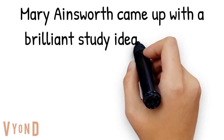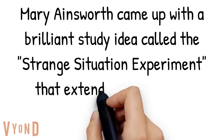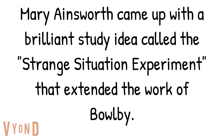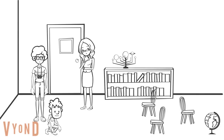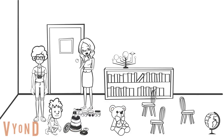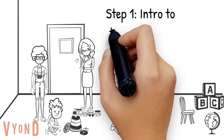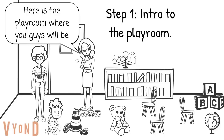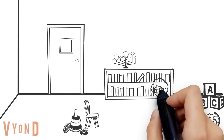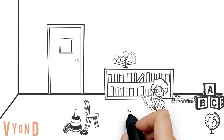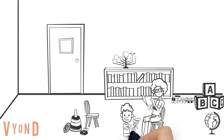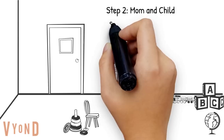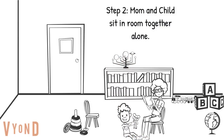Mary Ainsworth came up with a brilliant study called the strange situation experiment that extended the work of John Bowlby. In step one, the researcher introduces the parent and child to a playroom where they'll spend most of the study, with the child's interactions being observed throughout. In step two, the parent sits down, the child plays with toys, and researchers observe how close or far the child stays from the mother — staying nearby is called establishing her as a secure base.